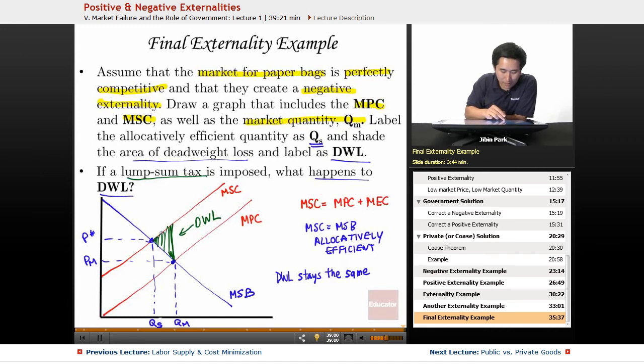What ends up happening is that you make the same production. Your profitability goes down, so your average total cost is going to increase, but your decision on how many paper bags to produce stays absolutely the same. Thank you for watching educator.com.